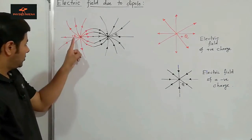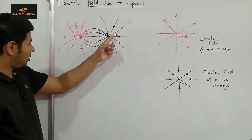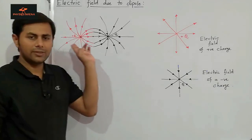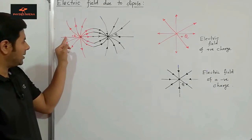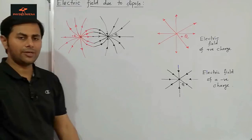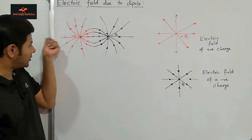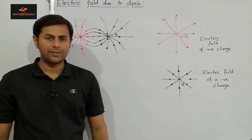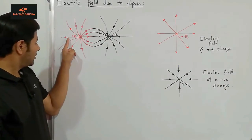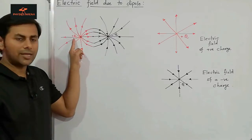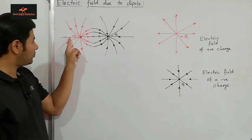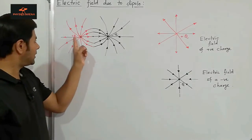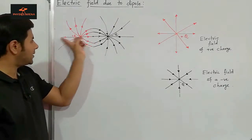On this side along the same line, the electric field will be directed radially outwards. If we keep some positive charge here it will get repelled by this positive charge and attracted by the negative charge, but it is closer to the positive charge than to the negative charge. Therefore the force of repulsion is more than the force of attraction, and that's why the field is directed outwards.